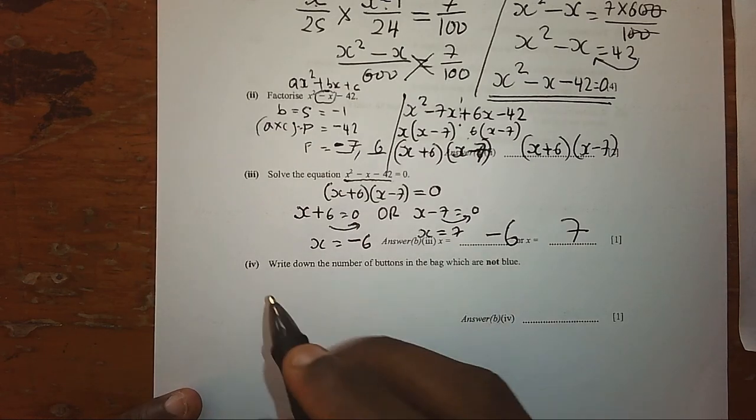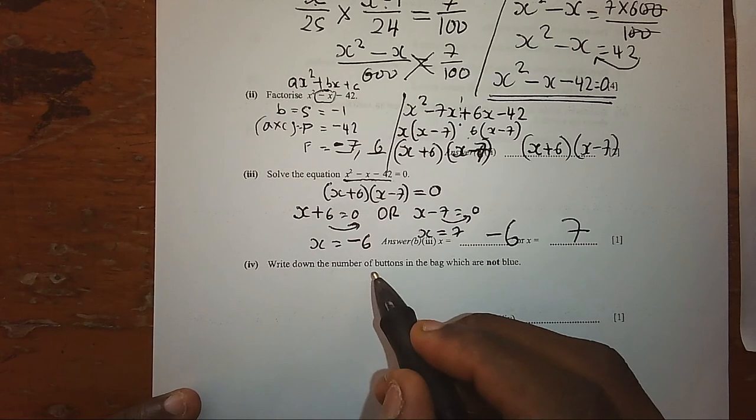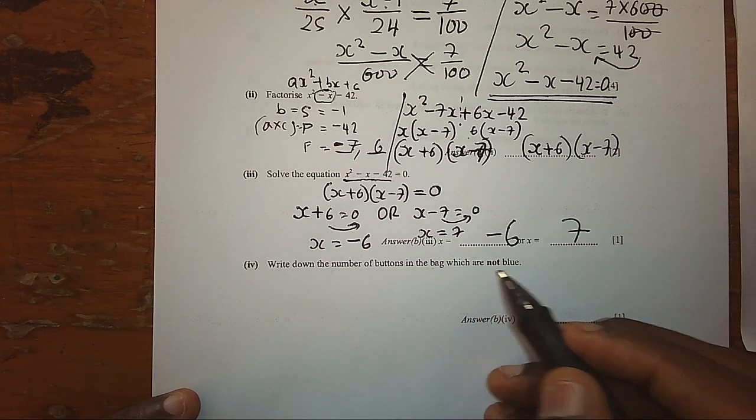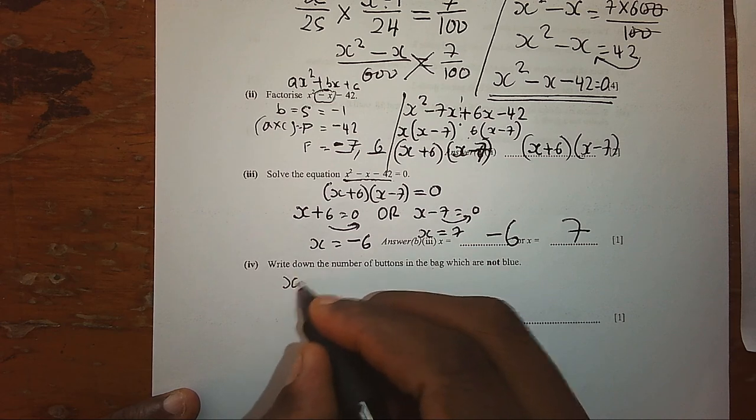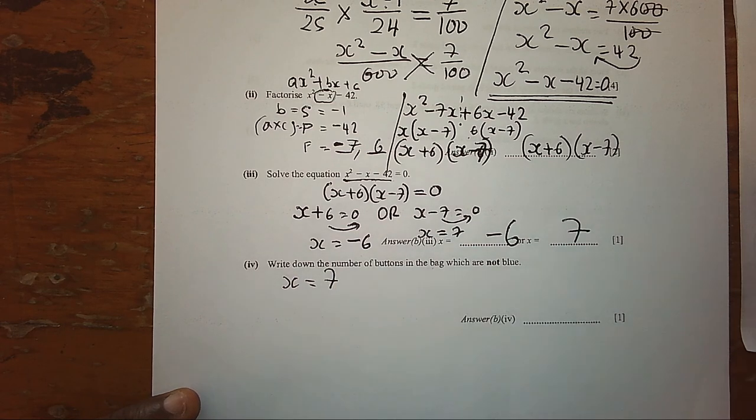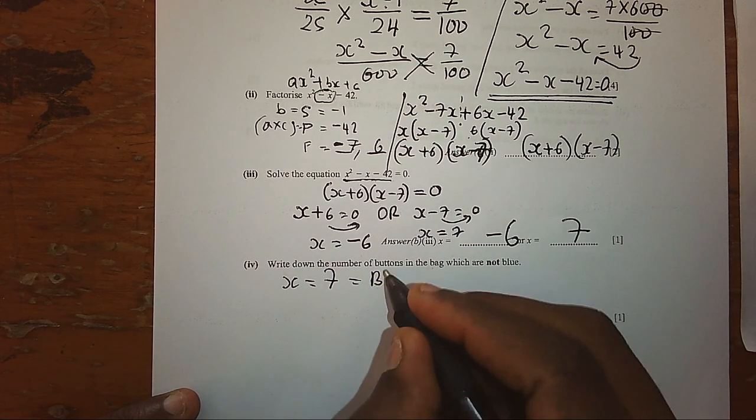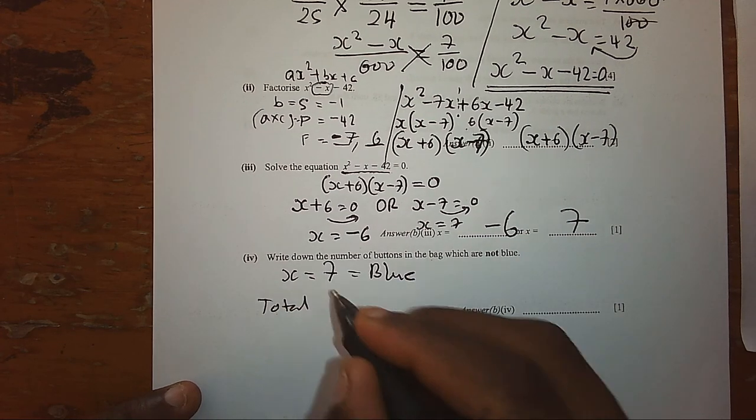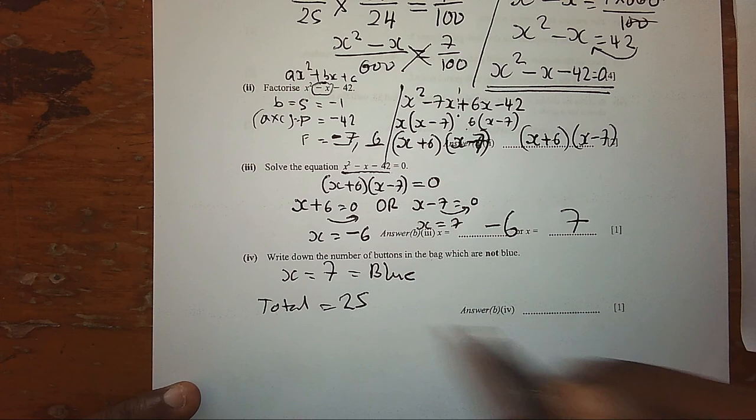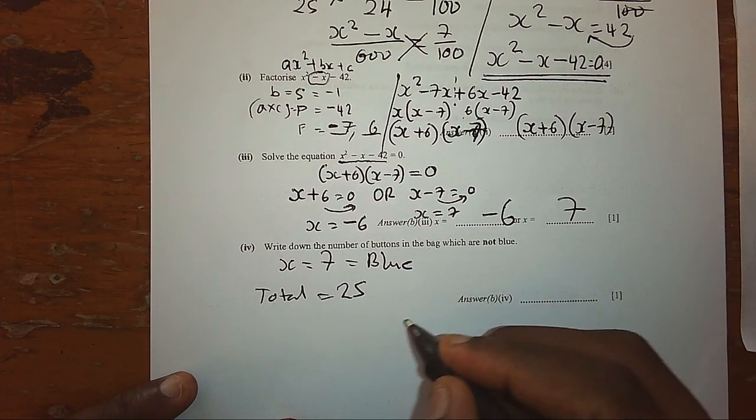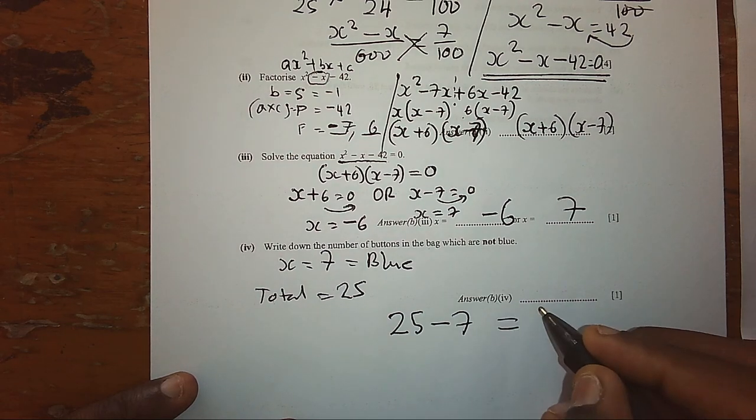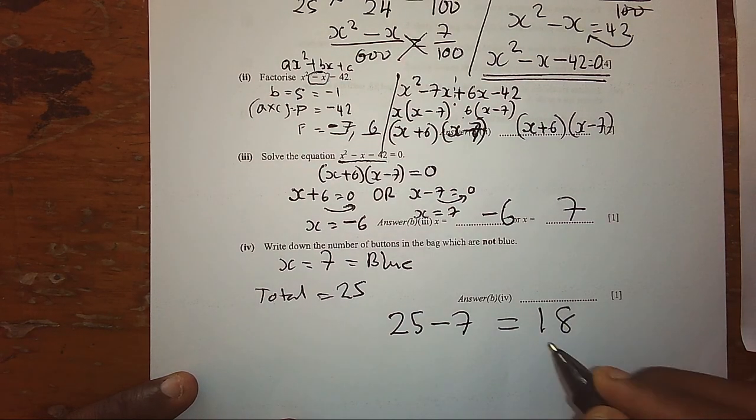Write down the number of buttons in the bag which are not blue. Since we said X is representing 7, and 7 is representing blue, and we know the total buttons are 25, therefore those which are not blue will be 25 minus the 7 which are blue, giving us 18 buttons.